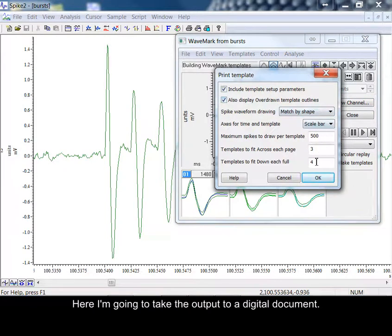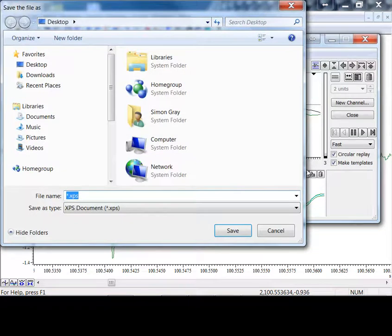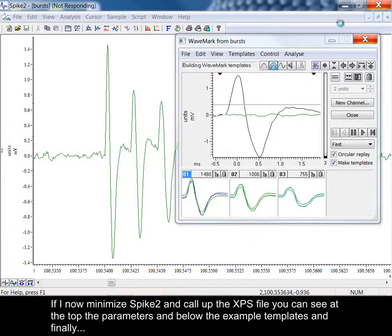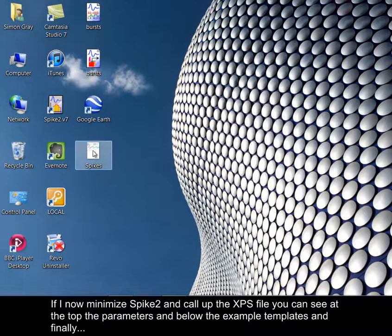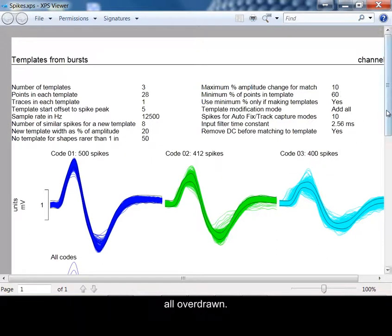Here I'm going to take the output to a digital document. If I now minimize Spike2 and call up the XPS file, you can see at the top the parameters and below the example templates and finally all overdrawn.